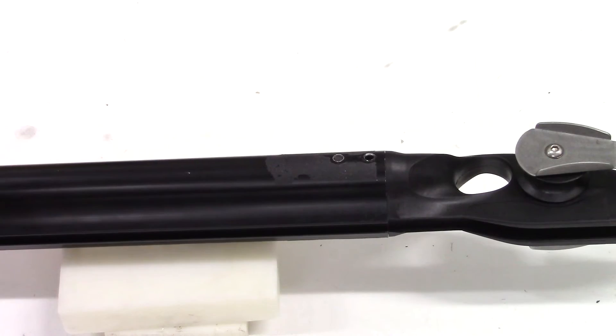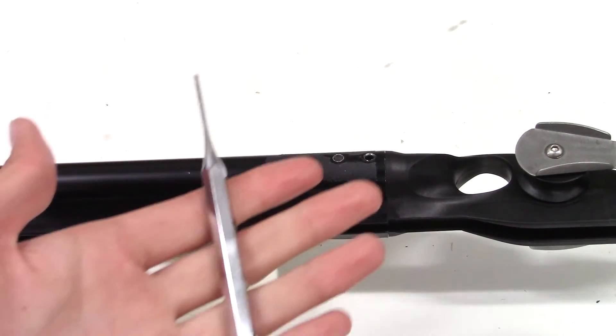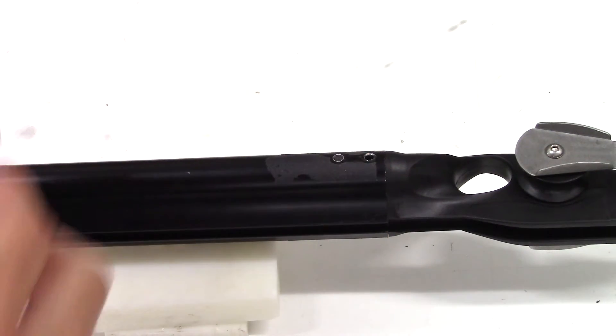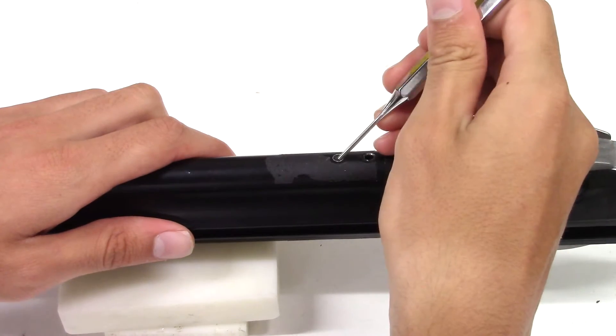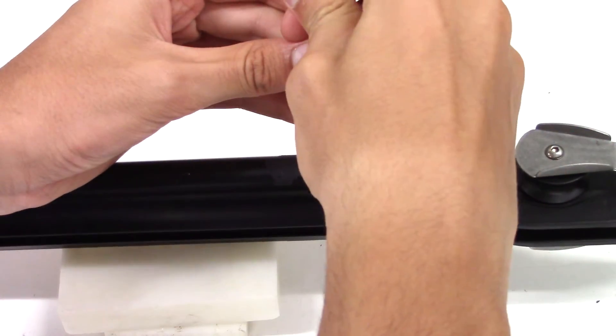The first thing you will need to do is to remove the muzzle. Using a 1/16th inch punch, push out both of the retaining pins.